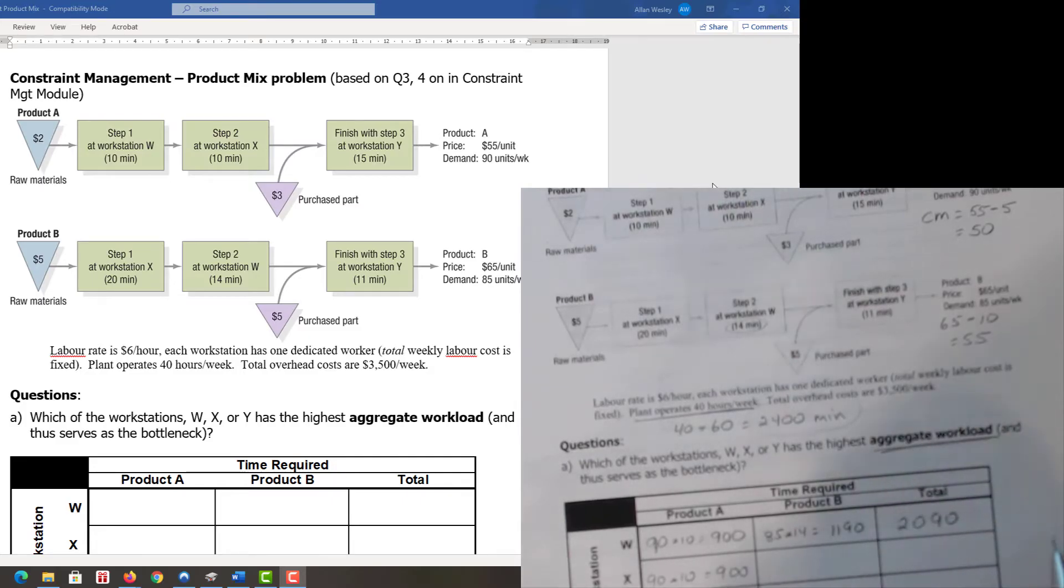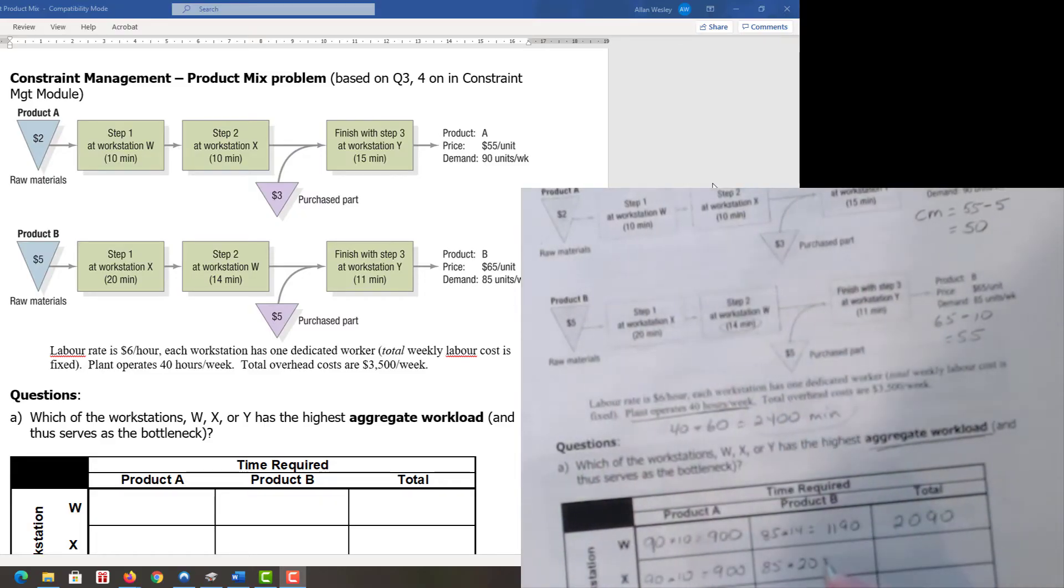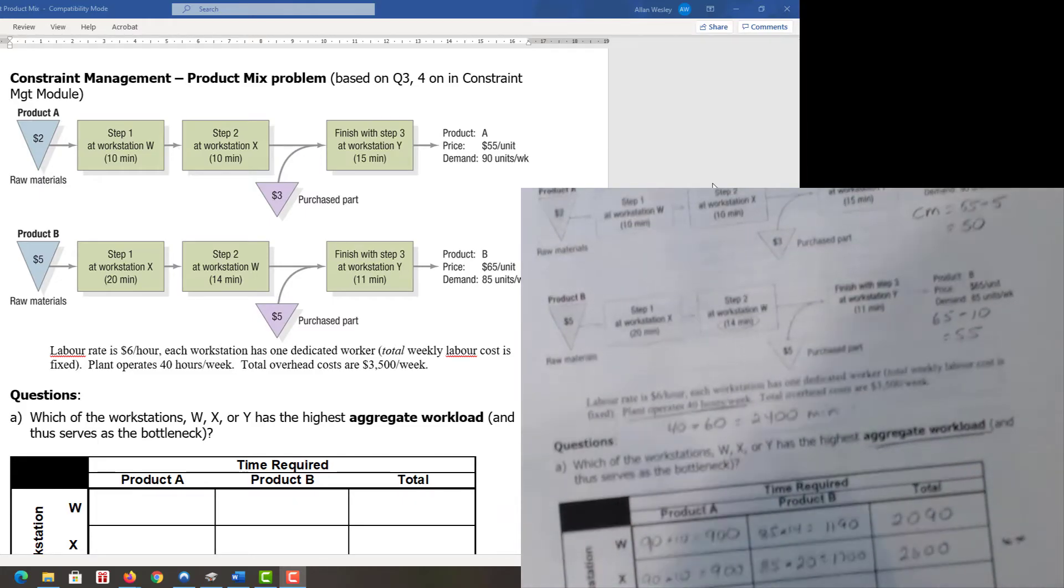At workstation X, 85 units at 20 minutes each consumes 1,700 minutes. Totaling those up gives 2,600 minutes. That's more than the 2,400 maximum available, so that is a binding constraint. I want to use more than I have. At workstation Y, B consumes 11 minutes.